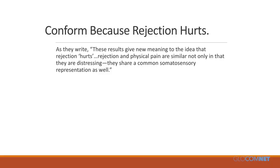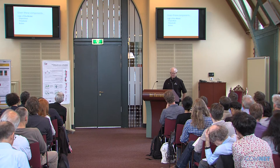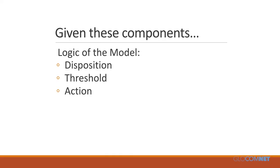They write: 'These results give new meaning to the idea that rejection hurts. Rejection and physical pain are similar not only in that they are distressing; they share a common somatosensory representation as well.' So I feel some license to give people weights through which they can experience the emotions and dispositions of other agents. Given these components, the logic of the model is: the agent acquires a disposition — not through imitation but by deeper processes — there's a threshold, and if the disposition exceeds it, they take action.